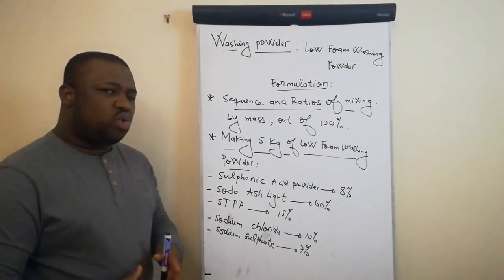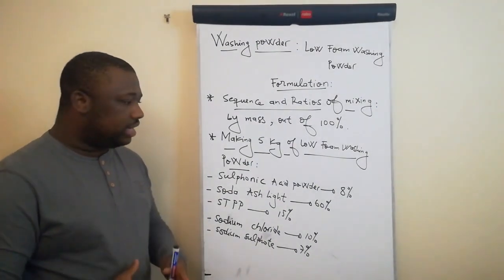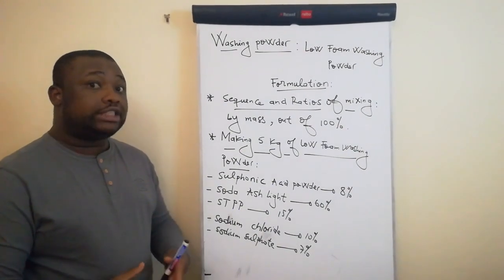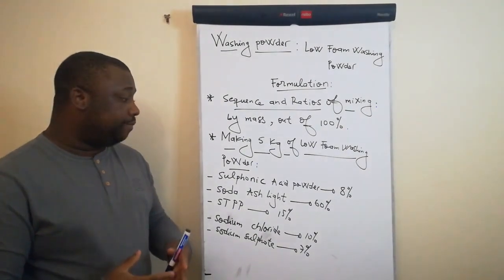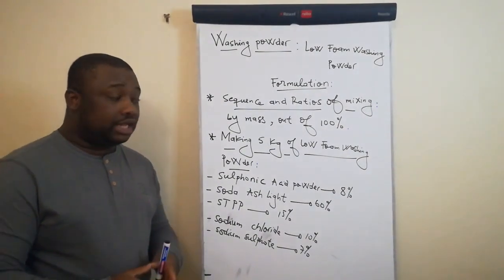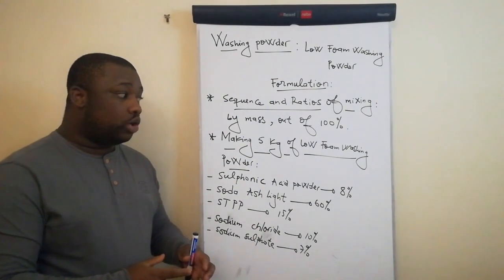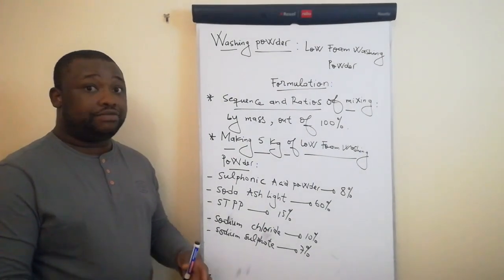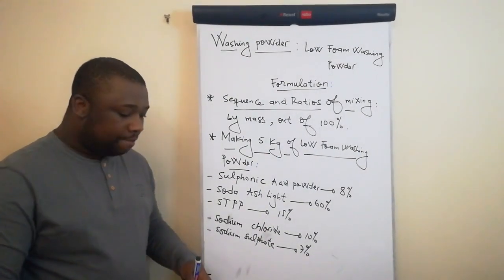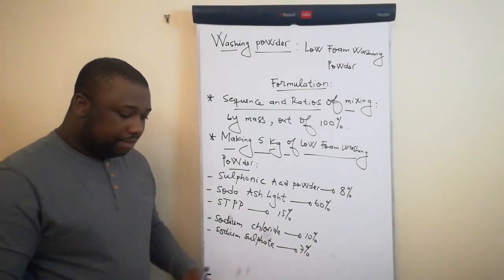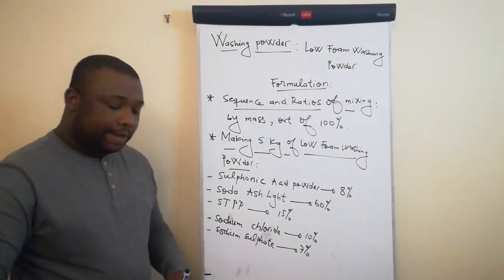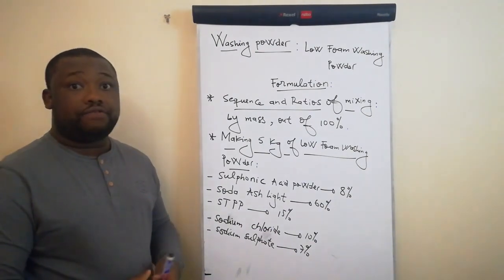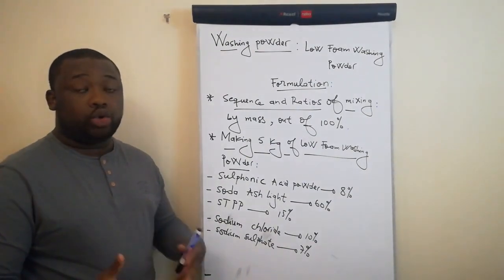All these ingredients that you see are powders. When mixing them, the sequence does not really matter much. You just have to get each and every ingredient according to its related or specific amount, then blend them together and mix until you obtain a uniform powder or uniform mixture.